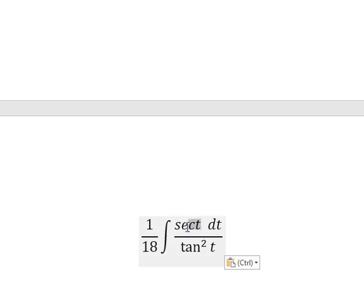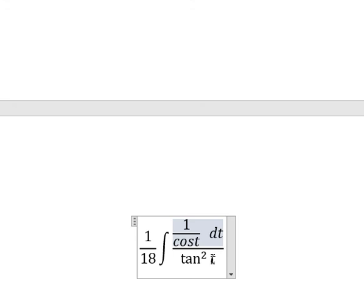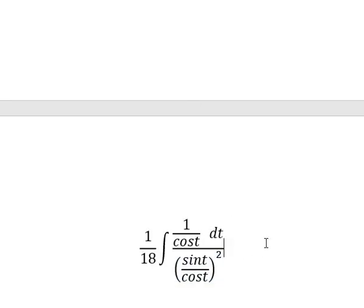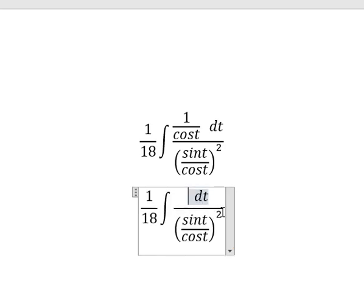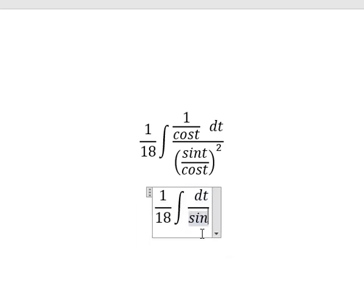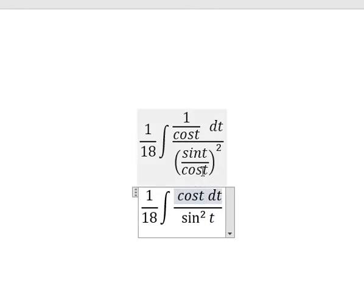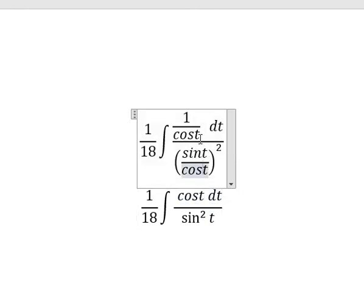And we know that secant of t, that is about 1 over cosine t. Tan t square, we change for cosine t over cosine t over cosine t to the power of 2. So we simplify cosine t, cosine t. And we put cosine t in here. Because we have cosine t, that's why we put them into numerator.